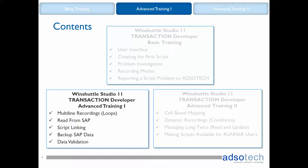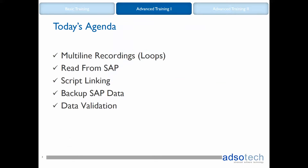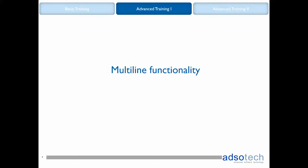We are now in the Advanced 1 training package which includes multiline recordings, reading from SAP, chaining scripts together, taking backups, and data validation. This is the first portion of the package where we will concentrate on multiline recordings — that's using the loop feature. Let's dive in.